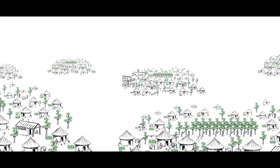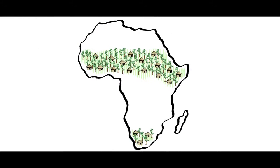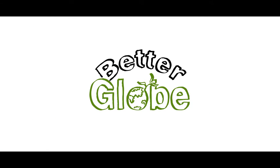Better Globe's goal is to plant five billion trees in Africa by 2026. By then, we will have built more schools and given micro-credit to more poor farmers than any other organization has done before.